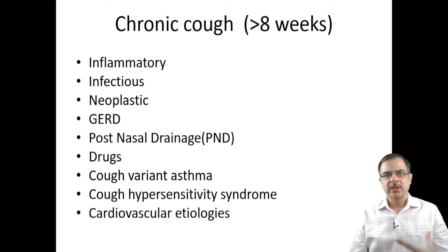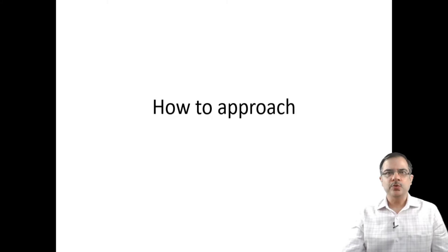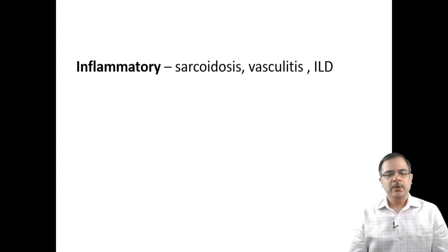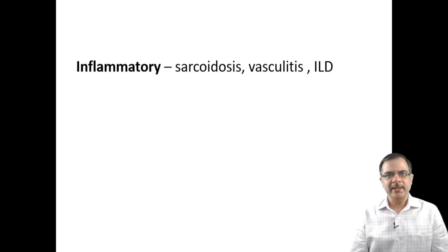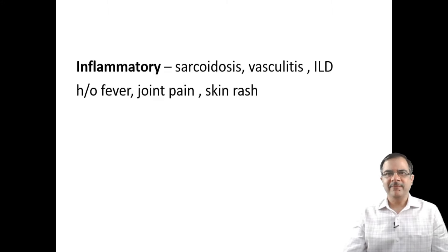We will discuss how to rule out these disorders: what history to take, what clinical examination to perform, and which investigations to order. For inflammatory causes like sarcoidosis, vasculitis, or interstitial lung disease, we should ask about history of fever, joint pain, and skin rash.